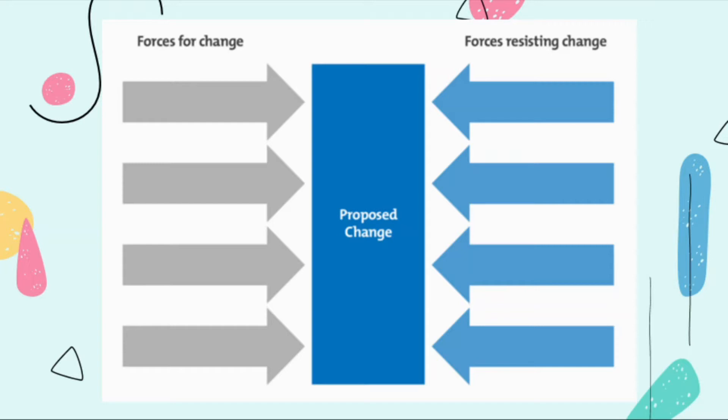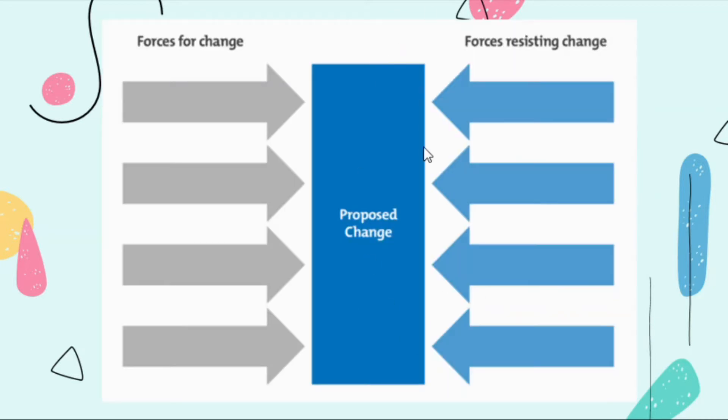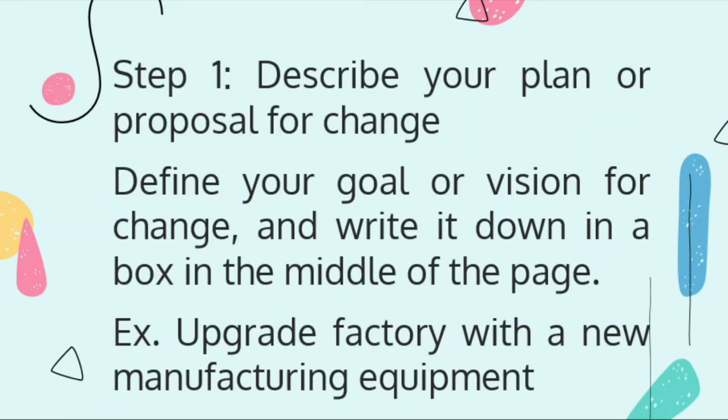Let's try to understand the steps that we can take while using Force Field Analysis. First one is describe your plan or proposal for change. You should have, you must define your goal or vision for change. Write it down in the middle of the page. For example, in a business you want to upgrade the factory with new manufacturing equipment, you want to make your equipment high-tech in your factory.